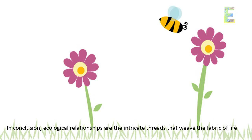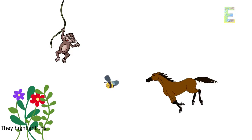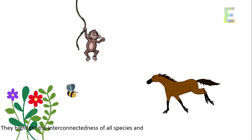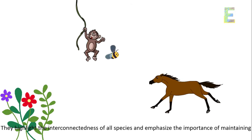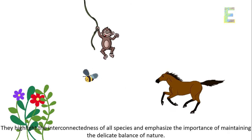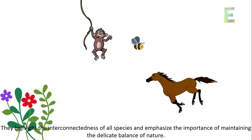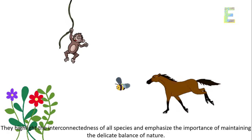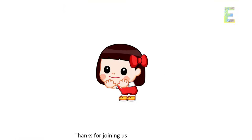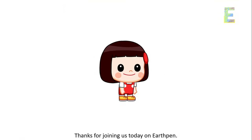In conclusion, ecological relationships are the intricate threads that weave the fabric of life on our planet. They highlight the interconnectedness of all species and emphasize the importance of maintaining the delicate balance of nature. Thanks for joining us today on EarthPen.